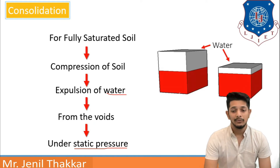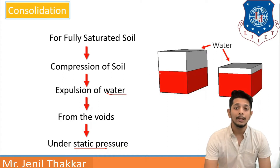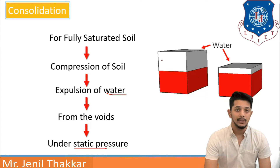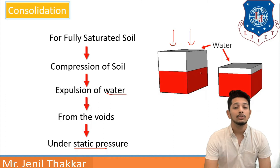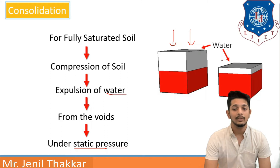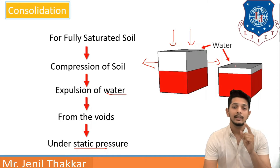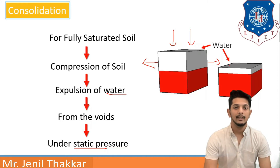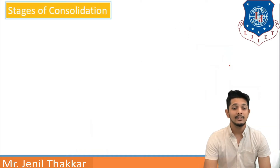We can understand consolidation through this phase diagram. Here, a two-phase diagram of a soil particle is shown. The red area represents solid particles and the white area represents water particles. Under natural static pressure, the soil particles compress, causing water particles to be expelled. Due to this expulsion of water, the soil particle volume decreases, and this process is known as consolidation.